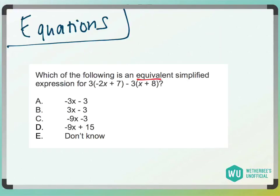All right, so we want to know an equivalent simplified expression. So it's fairly basic. We're going to distribute this 3 starting off, which would be 3 times negative 2, which is negative 6x. 3 times 7 is plus 21.